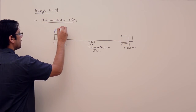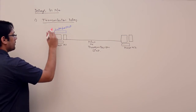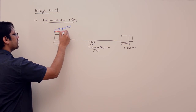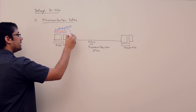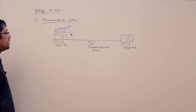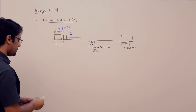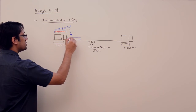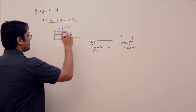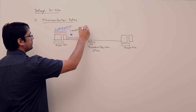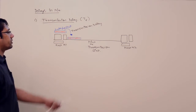This is a data packet which may have some bits — for example, bits are 1 1 0 1 1 1 0 0 1 1, and so on. The time taken to place this complete data packet on this transmission media is called transmission delay, or transmission time. We will denote transmission time as TT.